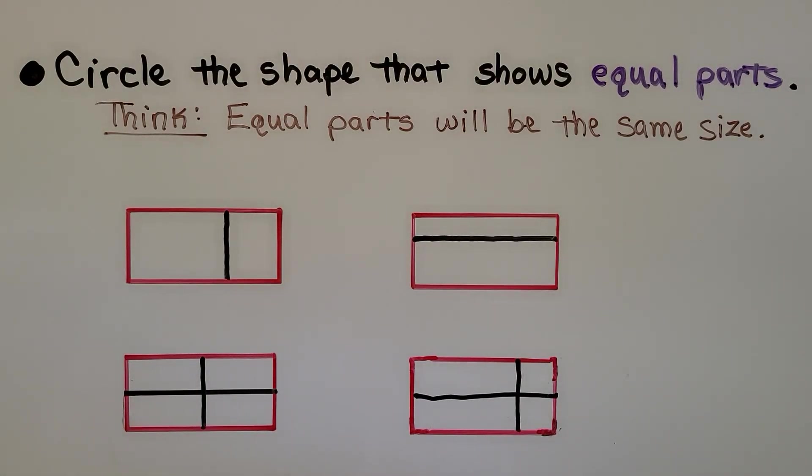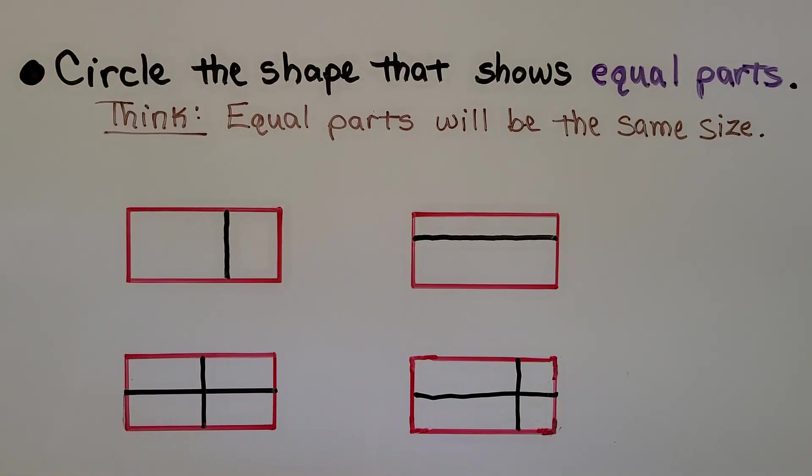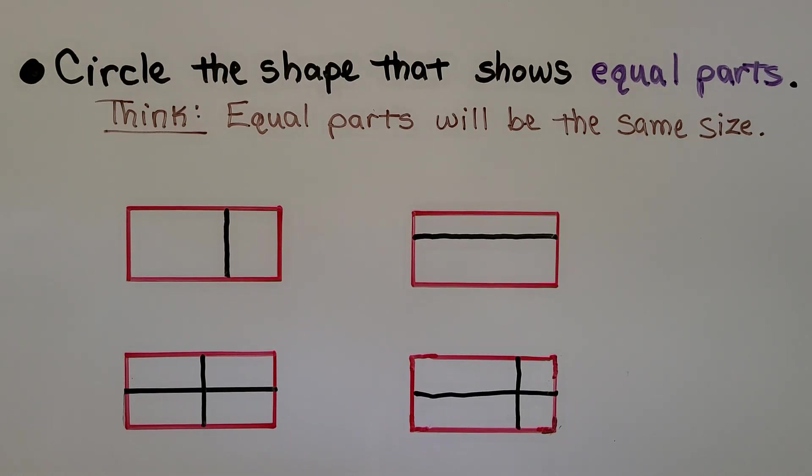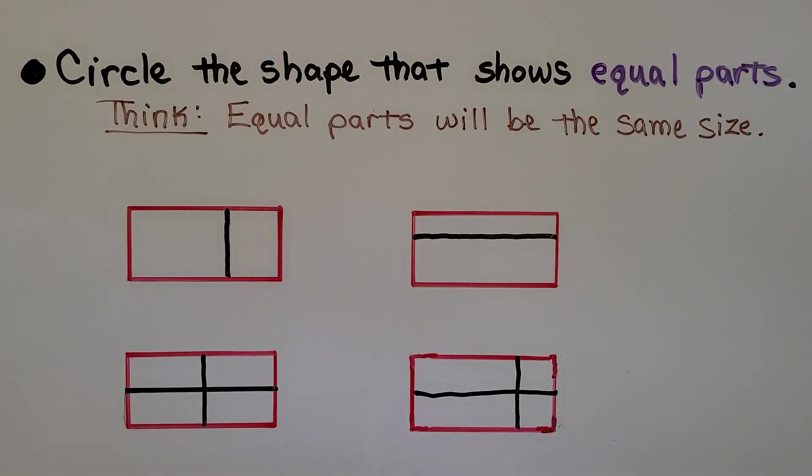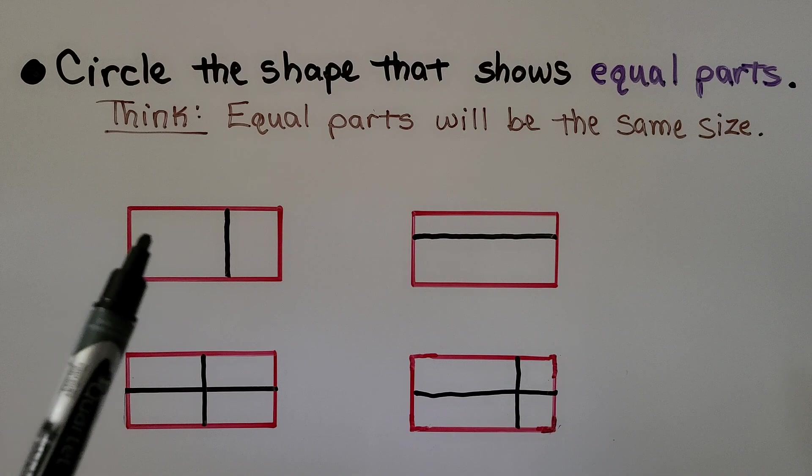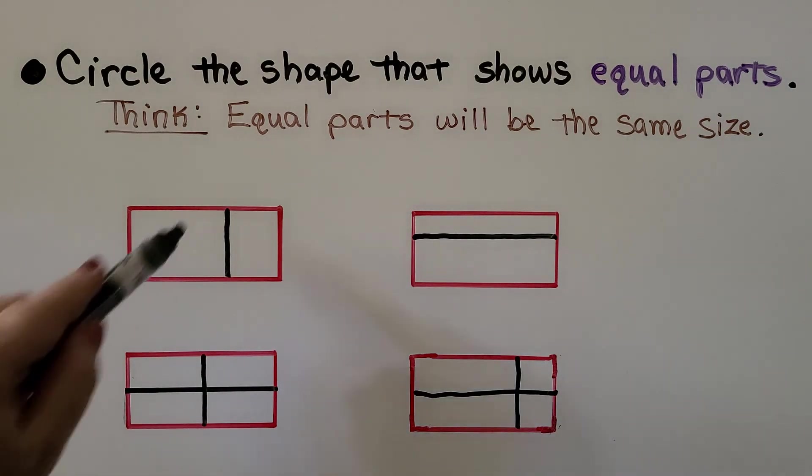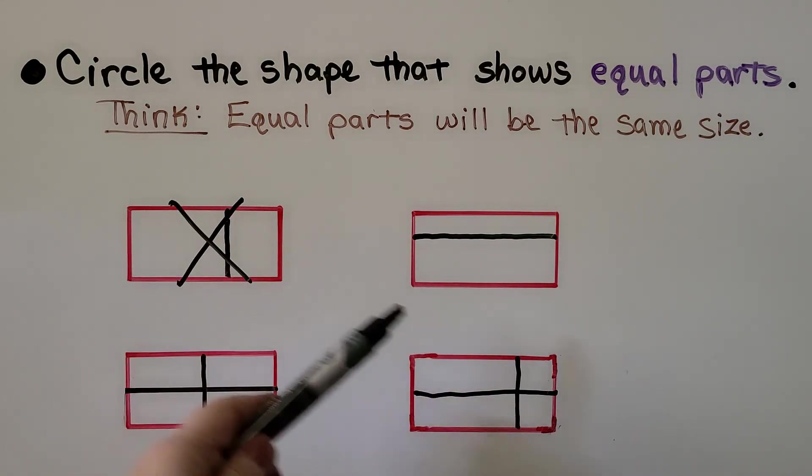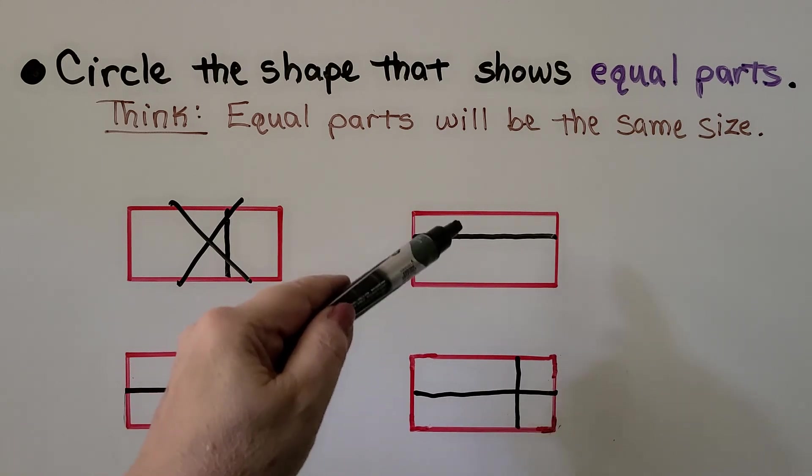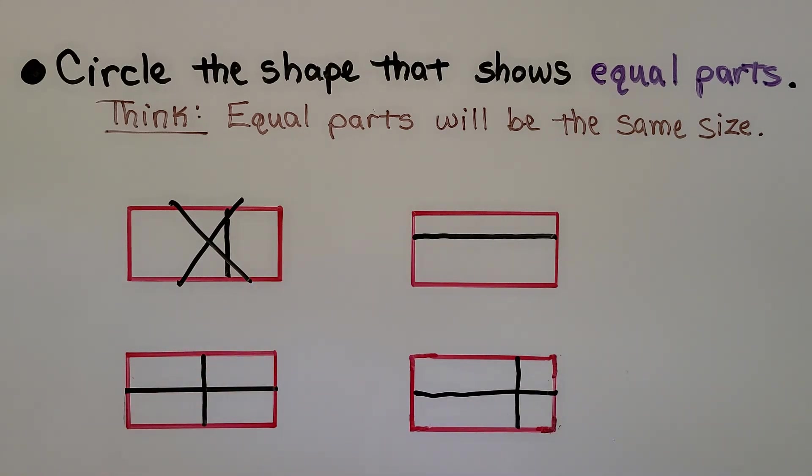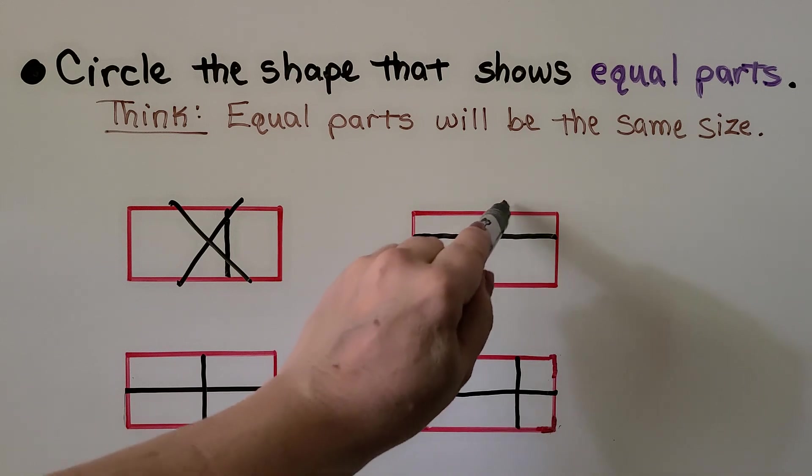Here it's telling us to circle the shape that shows equal parts. So we think equal parts will be the same size. Are these the same size? No. So it's not this one. Are both of these parts the same size? No. So it's not this one.